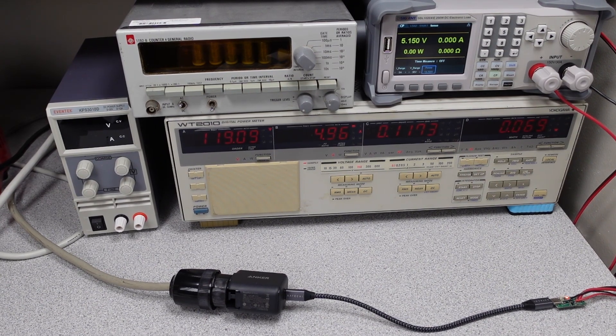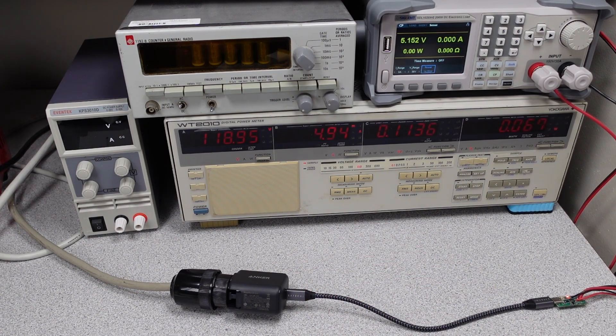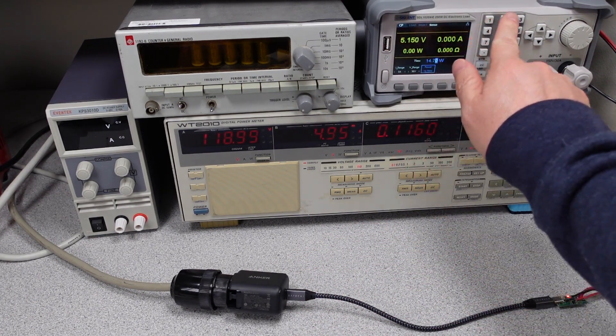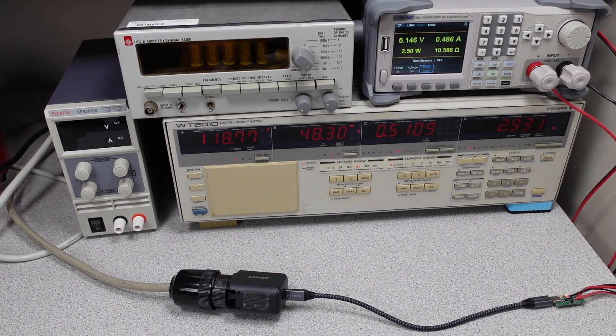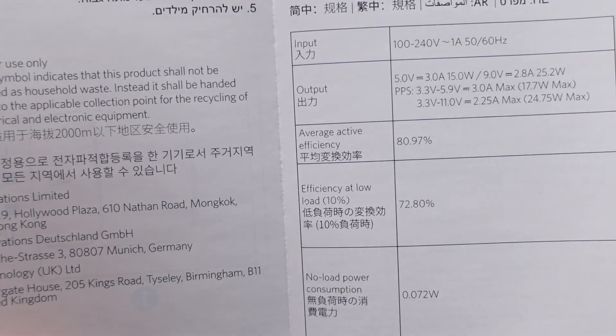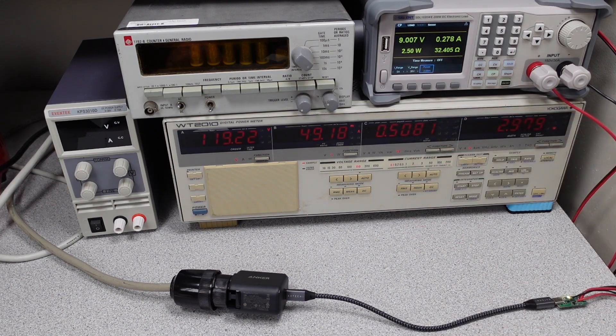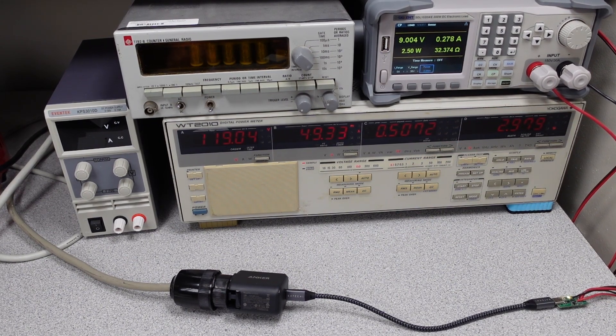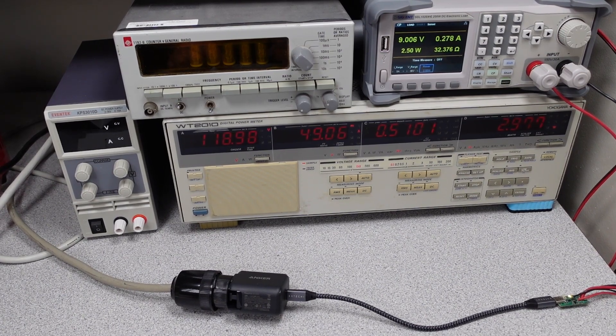So to get the maximum power out of this device, you do have to use it on the 9-volt mode. So their 10% efficiency claim, so that's going to be a 2.5 watt load, is 72.8%. I'm at 85% efficient right now. Way higher than what they claim. They claim 72.8% efficiency. That's good. So it's exceeding its rating. And then overall, in terms of average efficiency, they said this one was 80.97% efficiency, and it's not. It's like 85% efficient average.